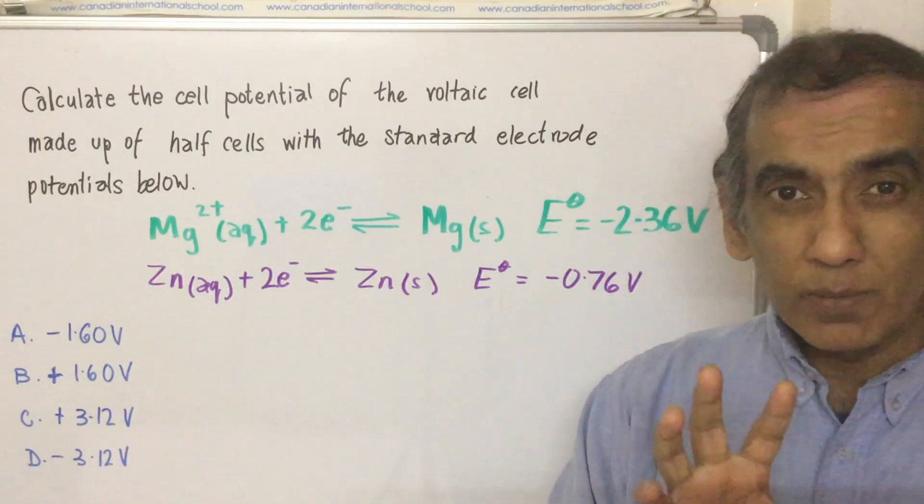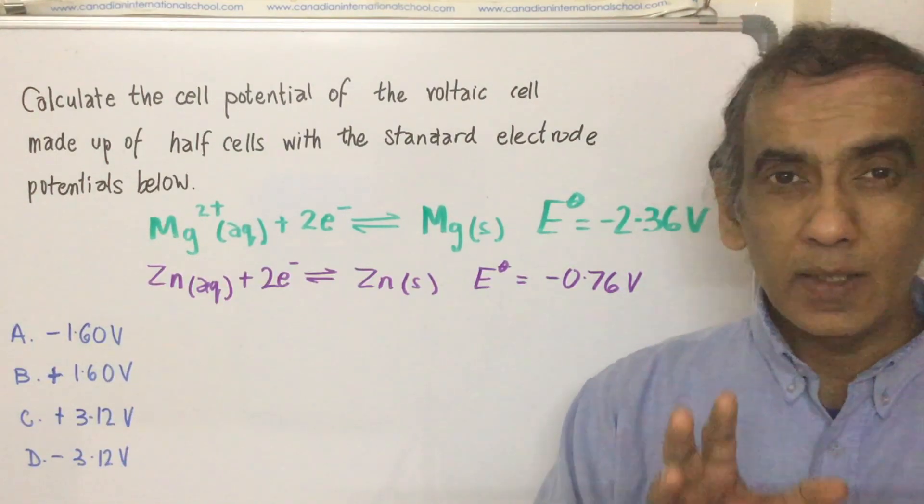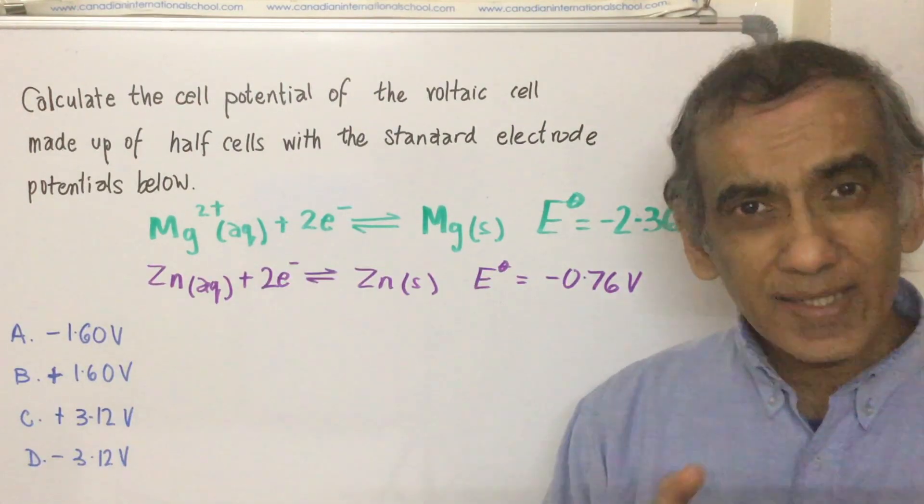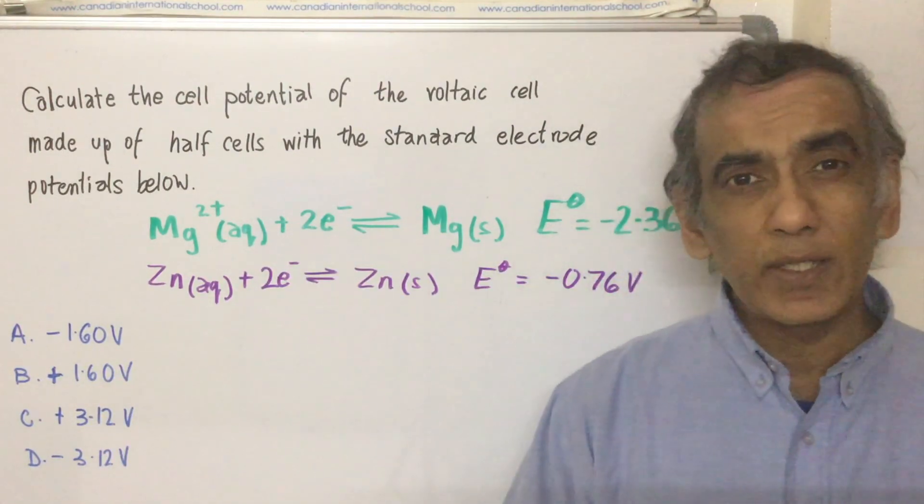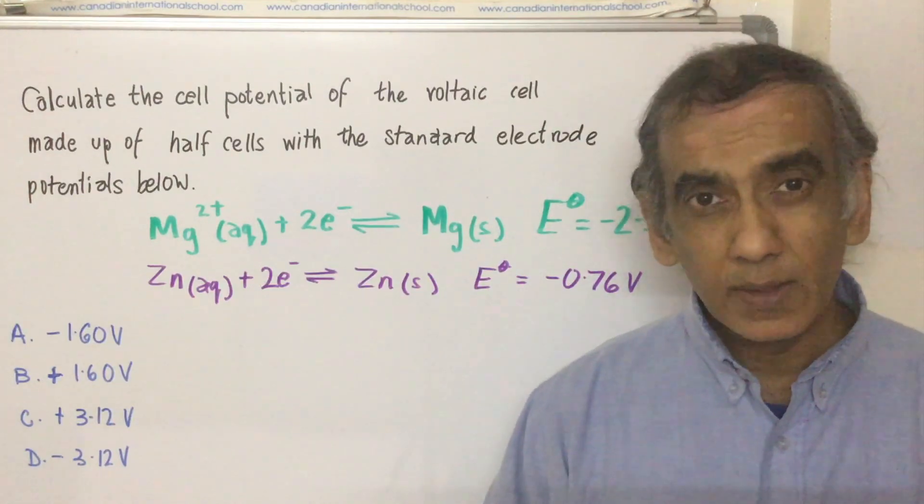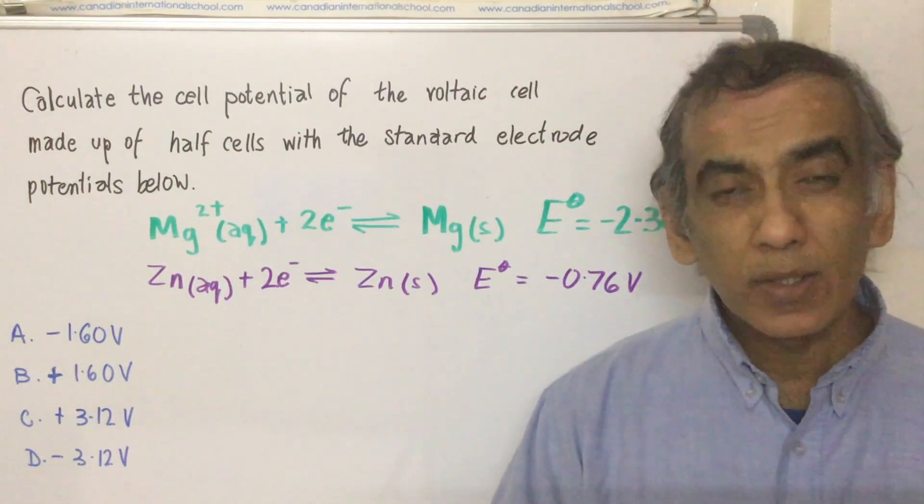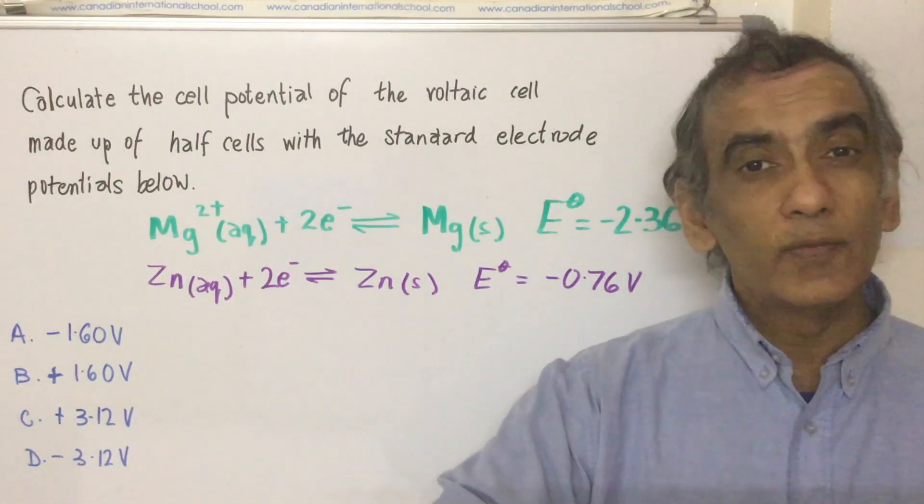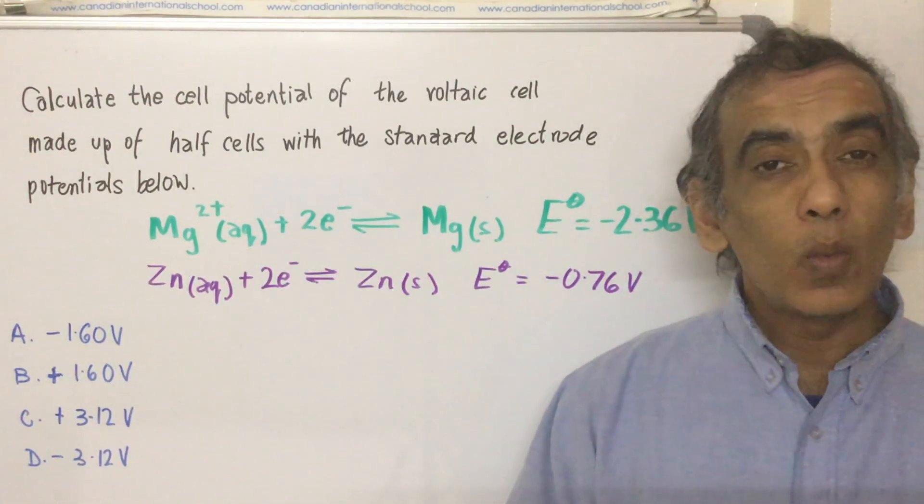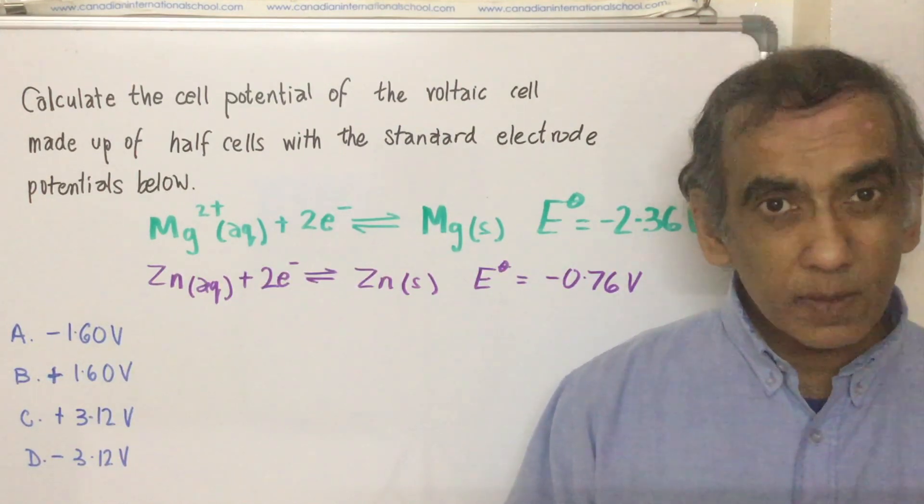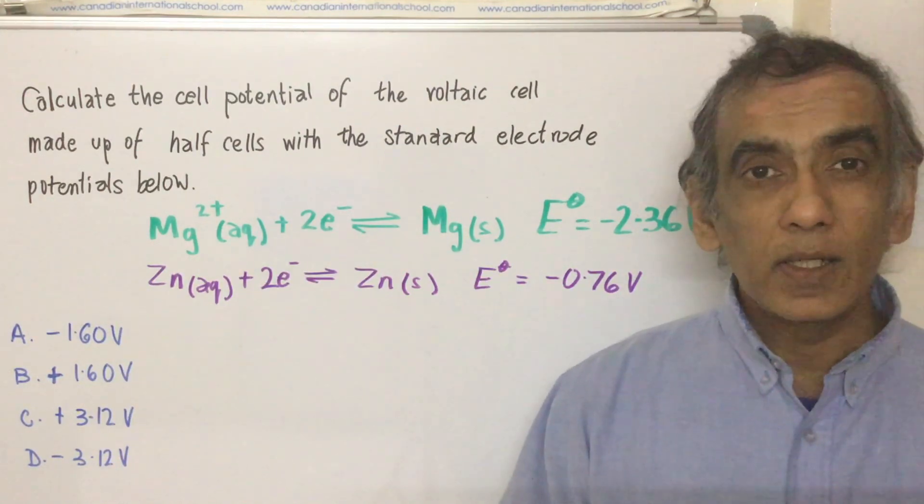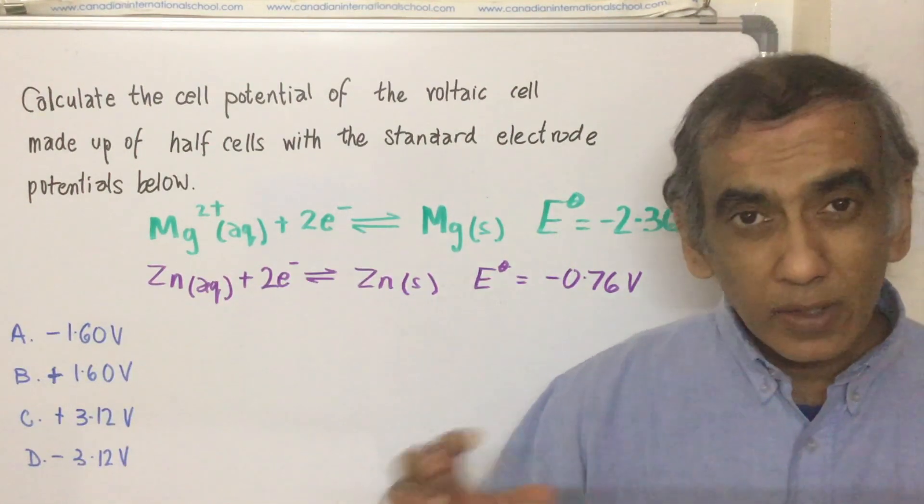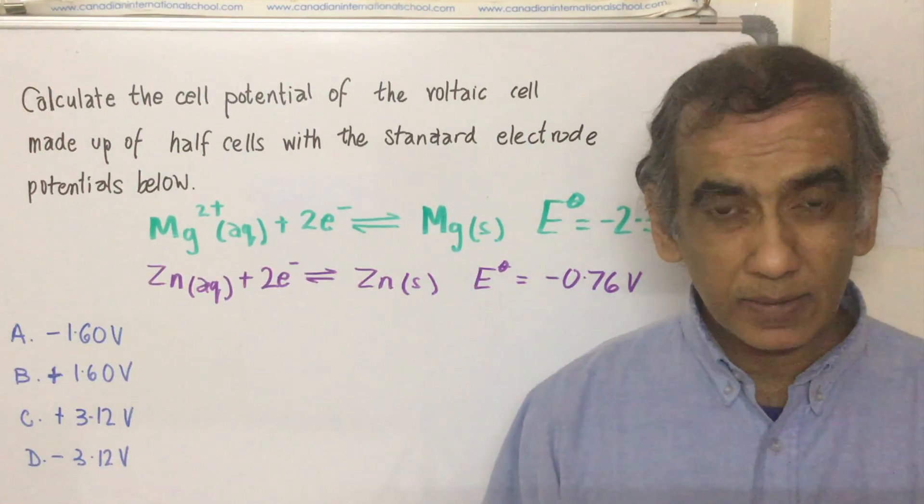Now to make this question very easy, it's important that you know that whenever a standard electrode potential is given to you, it's given really as a standard reduction potential. But in a voltaic cell, one element or one substance or one electrode is going to have oxidation happening at it and the other one is going to have reduction happening at it.